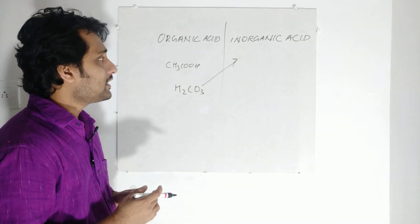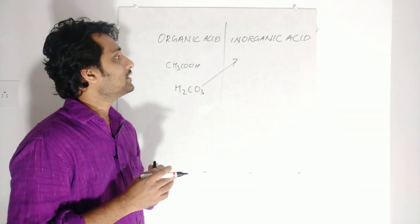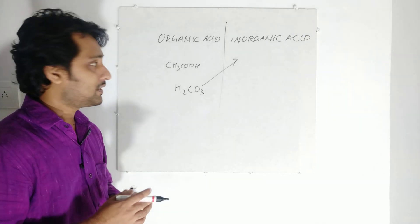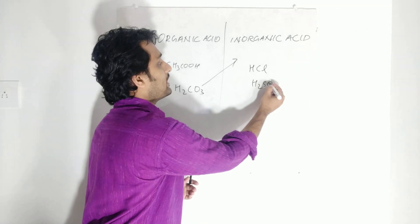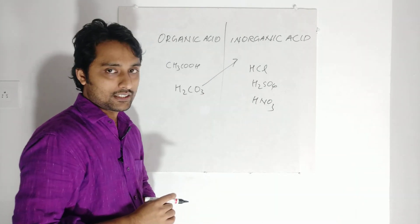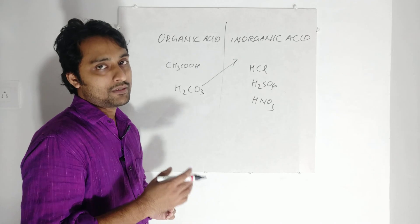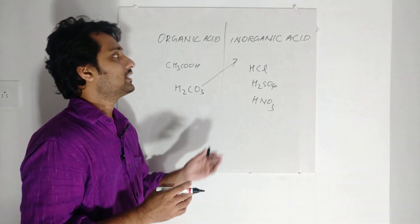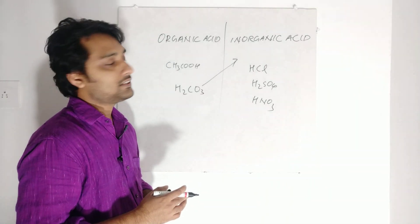So inorganic acid — also known as mineral acids — means the acid which does not contain carbon. For example, HCl is an inorganic acid. H₂SO₄ is an inorganic acid. And HNO₃ — these are examples of inorganic acids. These acids do not contain carbon, and they are highly powerful — very strong acids. Hydrochloric acid, sulphuric acid, and nitric acid are all very strong acids.